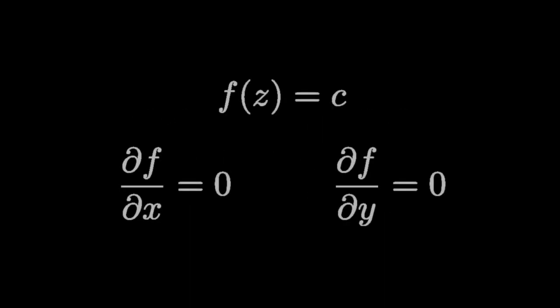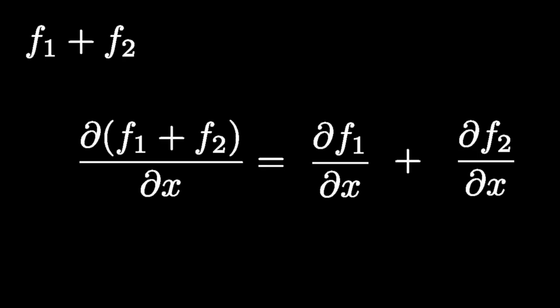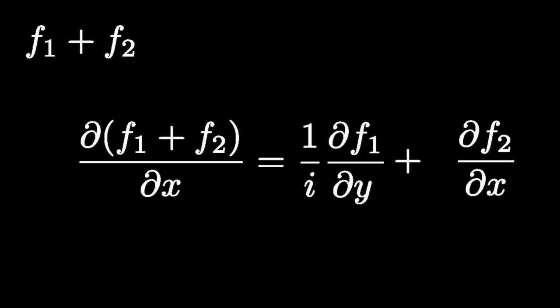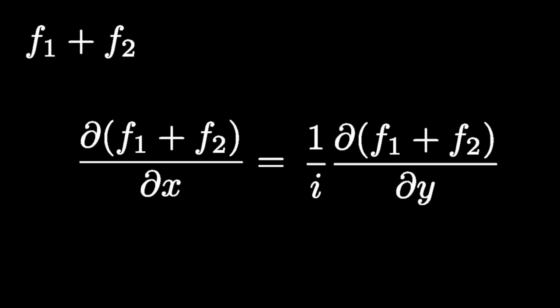As a trivial example, it's easy to see that the constant function f of z equal to c is complex analytic, since both sides of the Cauchy-Riemann equation are 0 in this case. Now let's show that the identity function f of z equals z is complex analytic. Let f1 and f2 be two complex analytic functions; then the sum f1 plus f2 and the product f1 times f2 are also complex analytic. This follows from the fact that the derivative is a linear operator, and combining what we've said is enough to prove that all polynomials are complex analytic for every point in the entire complex plane.